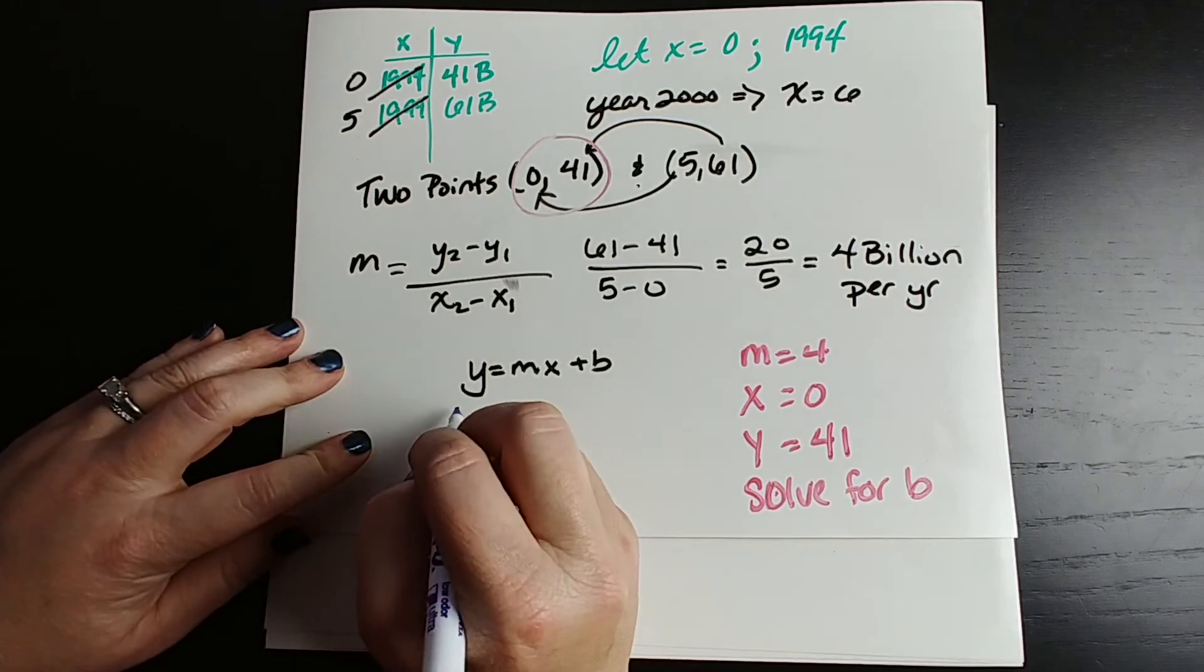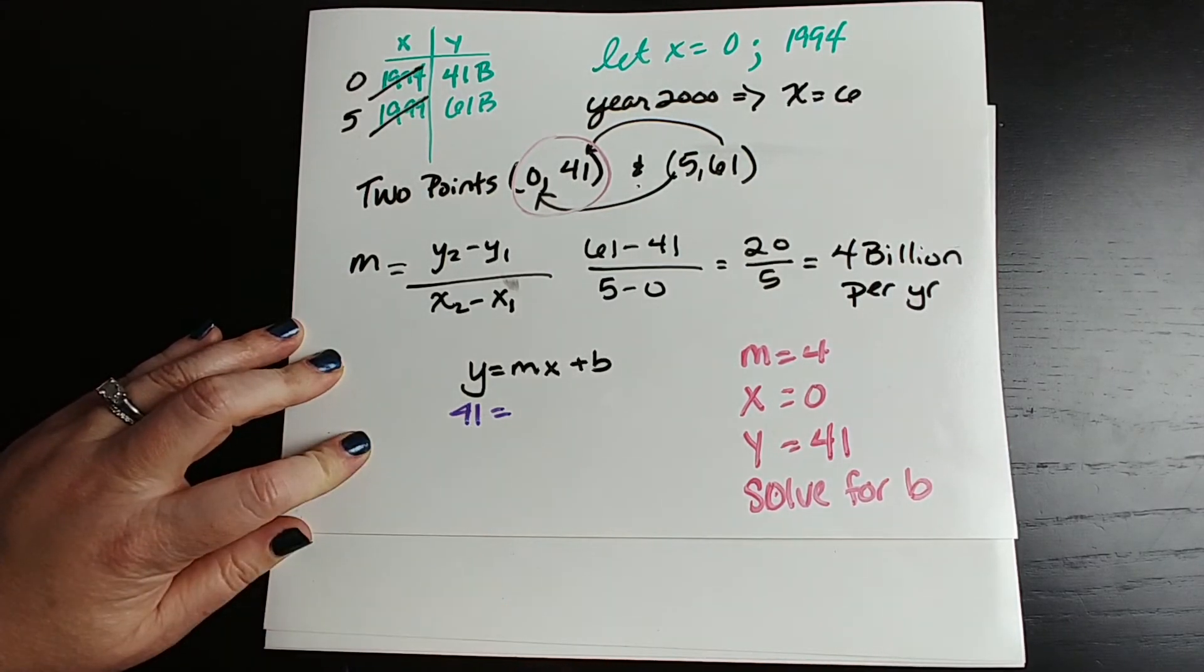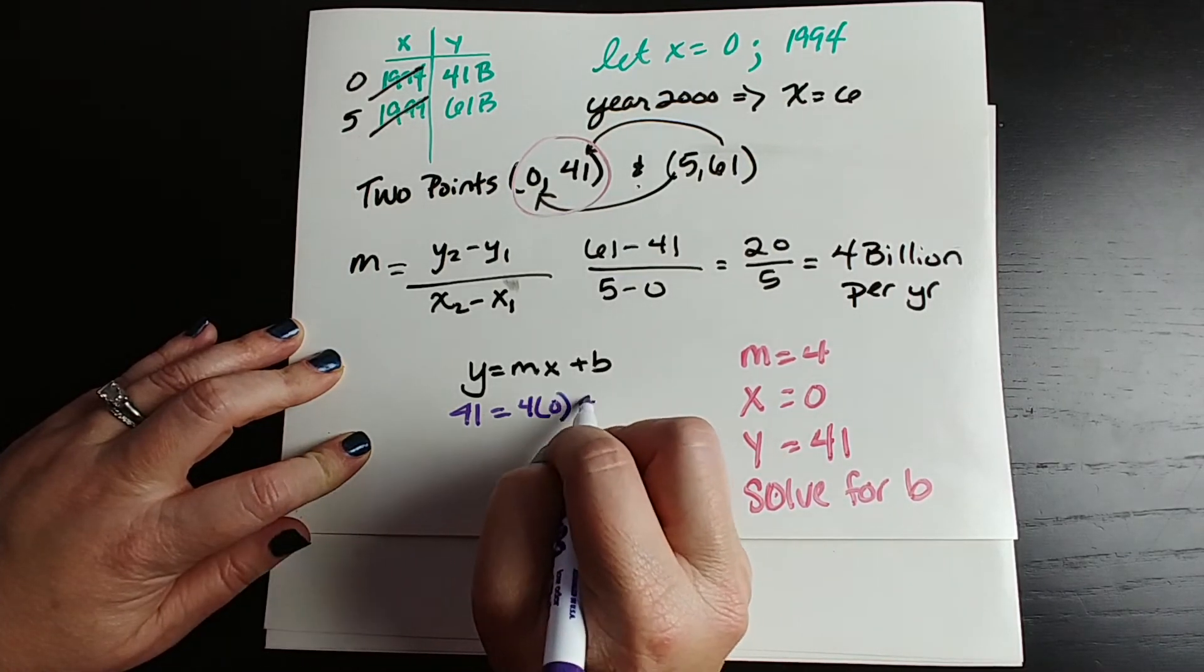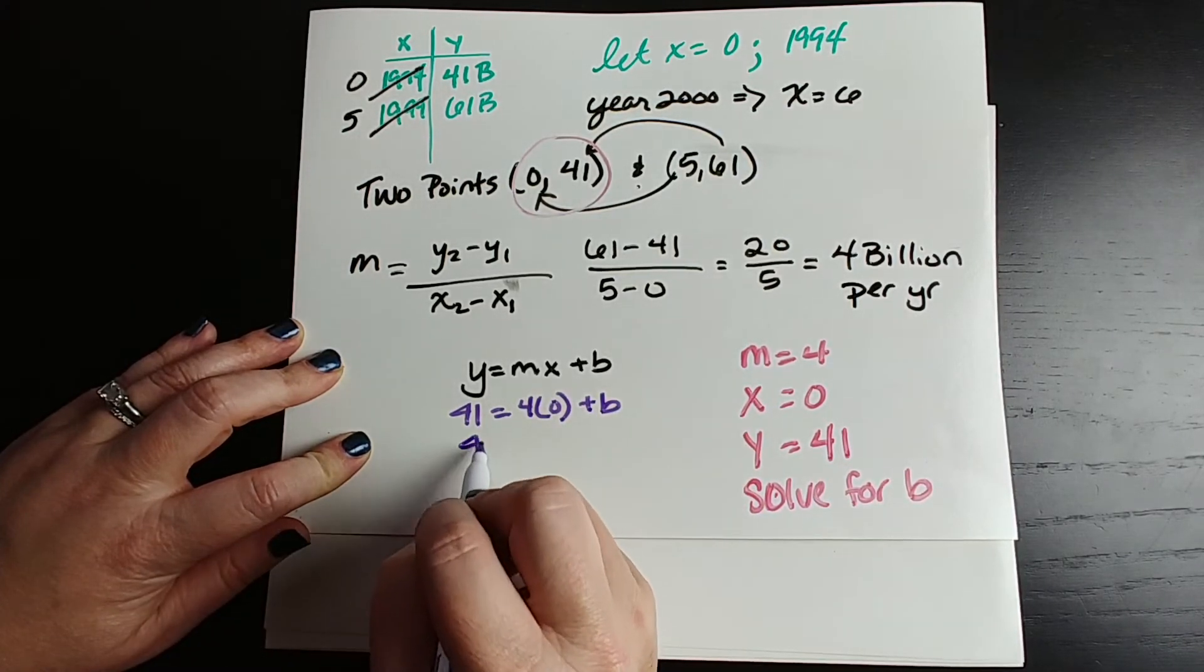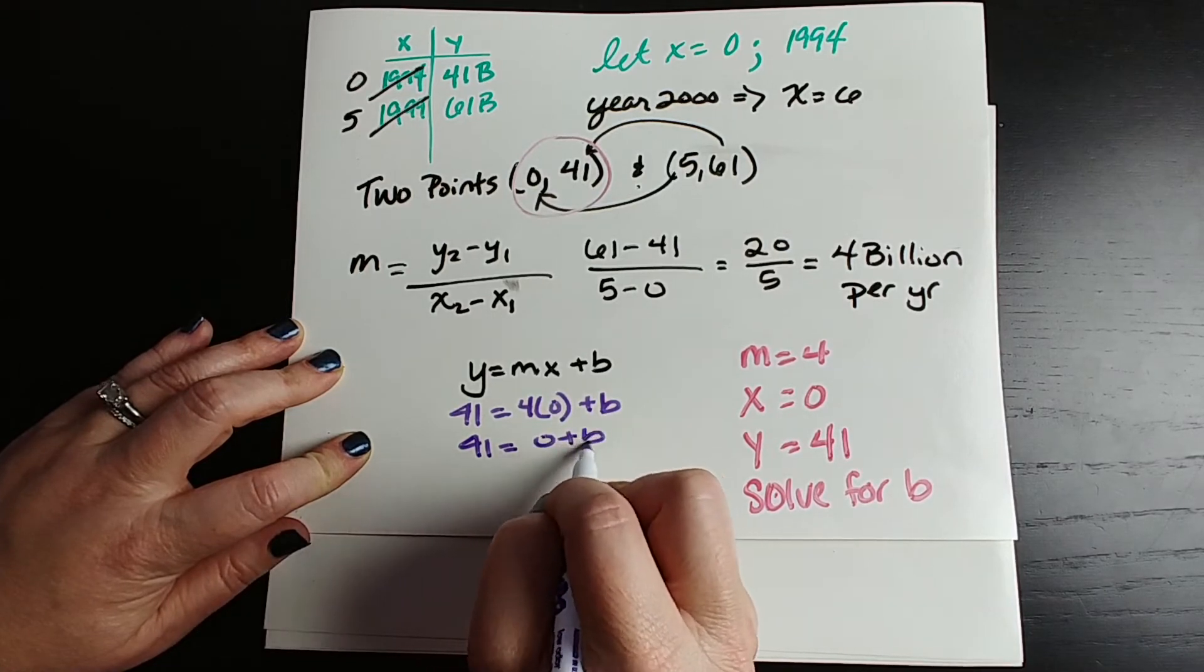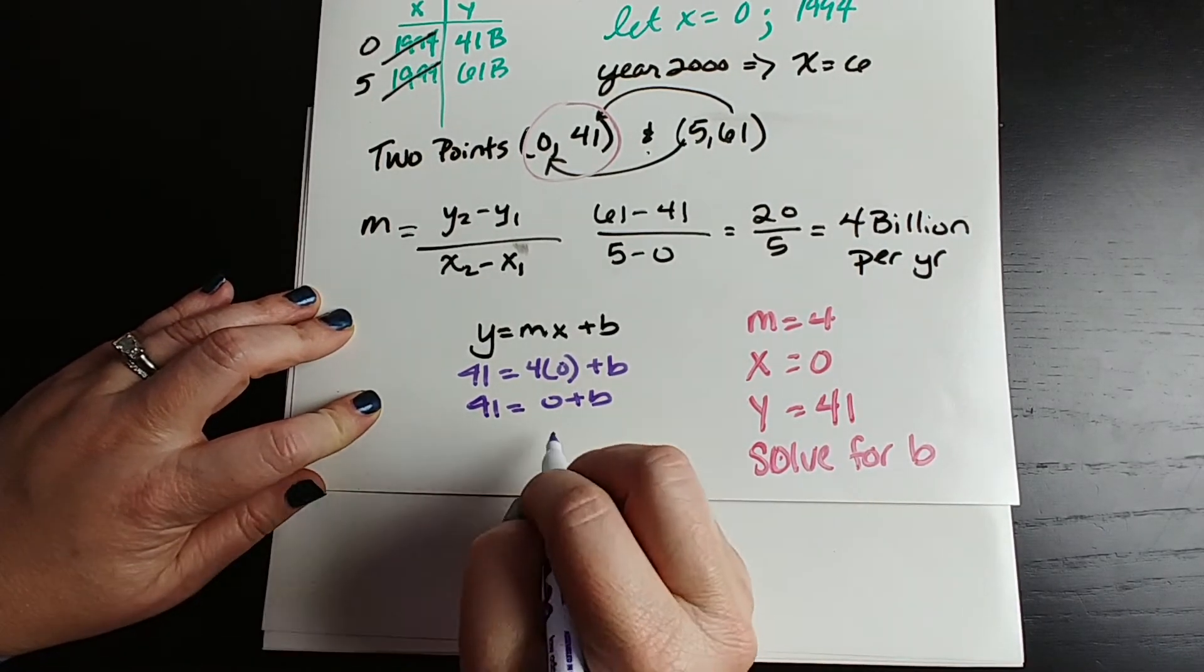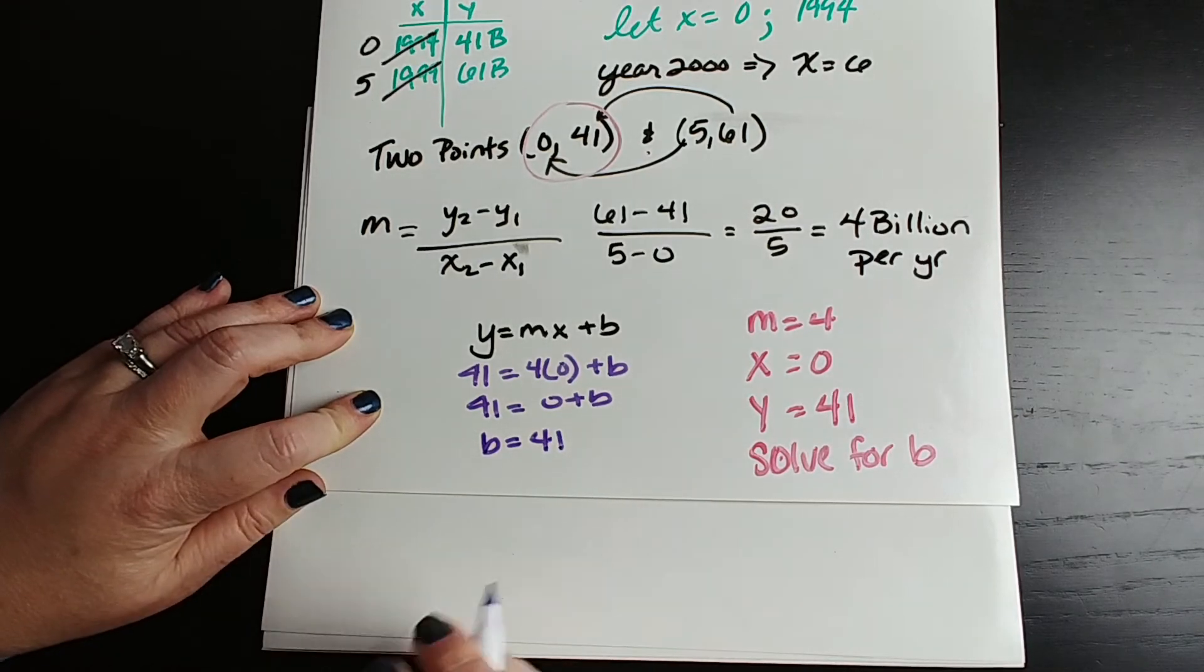All right, so for our y, we're going to put in 41. Now we've got a zero for x, and we have a four for m, so four times zero plus b. Well, that's just going to be 41 equals zero plus b. So b equals 41.